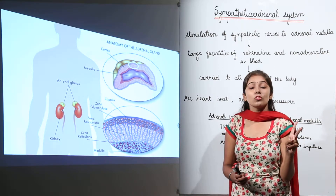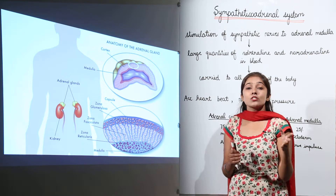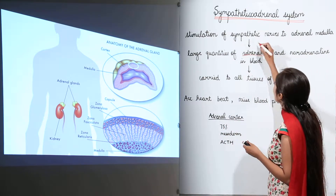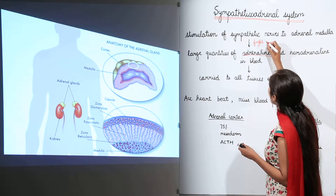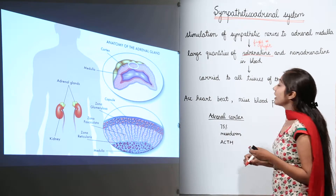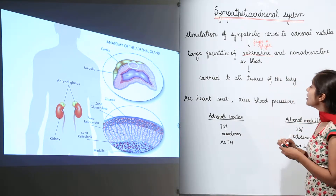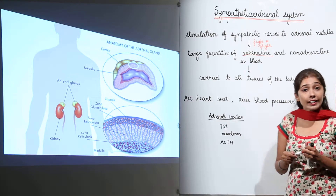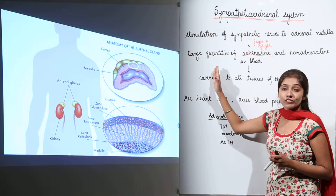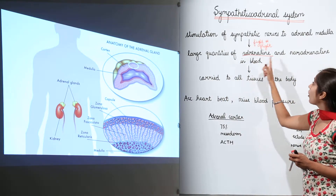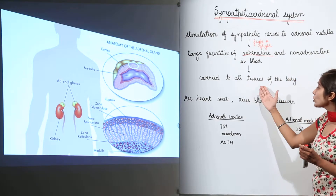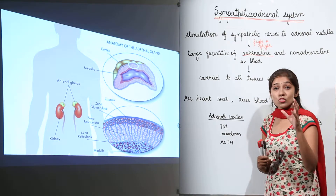Adrenaline is the emergency hormone which produces what we call the fight or flight response — that is why it is known as the emergency hormone of your body. When there is stimulation by the sympathetic nervous system, the adrenal medulla secretes large quantities of adrenaline and noradrenaline into the blood, which are then carried to all tissues of the body where they produce major effects.